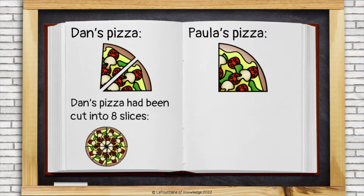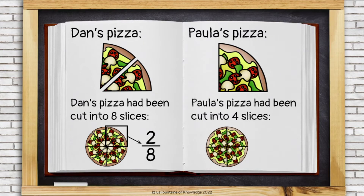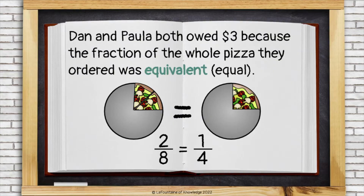Dan's pizza had been cut into eight slices — he had two-eighths of a pizza. Paula's pizza had been cut into four slices — she had one-fourth of a pizza. Dan and Paula both owed $3 because the fraction of the whole pizza they ordered was equivalent, or equal. Two-eighths equals one-fourth. They're the same amount of the whole pizza.